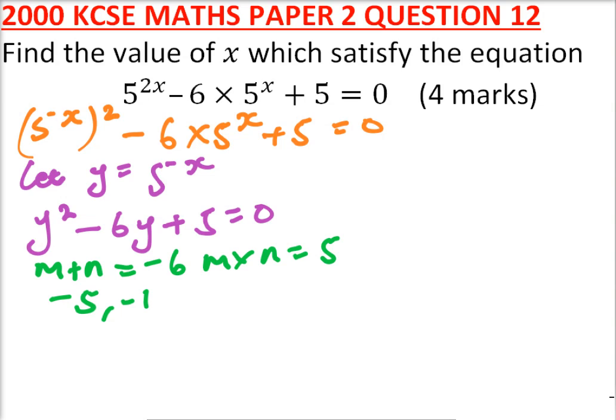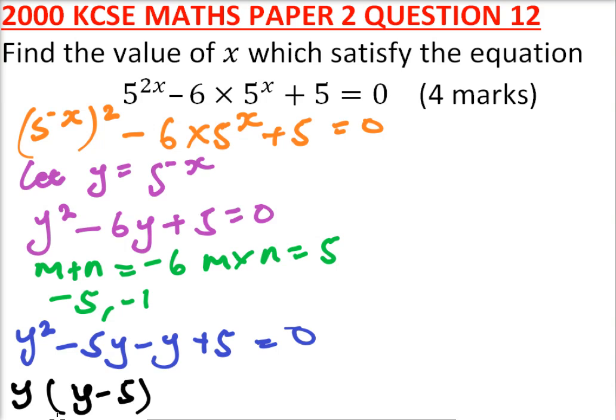We rewrite our equation: y squared minus 5y minus y, which is the same as minus 6, plus 5 is equals to 0. We factor out what is common. When you factor out what is common, you get y into bracket y minus 5, and you factor out minus 1, you get y minus 5 is equals to 0.